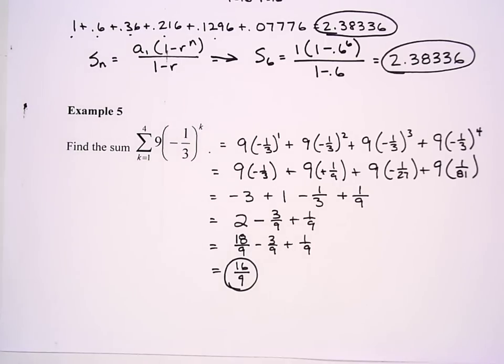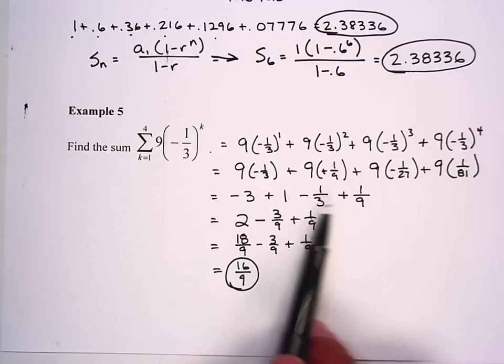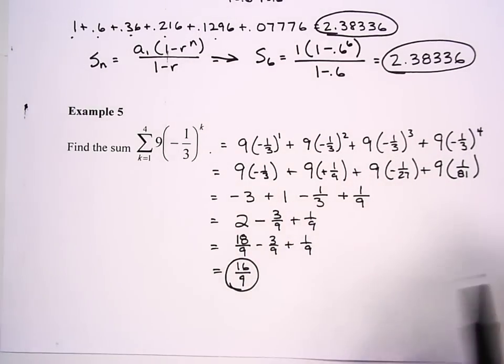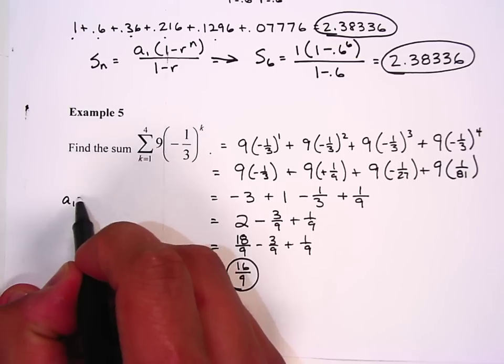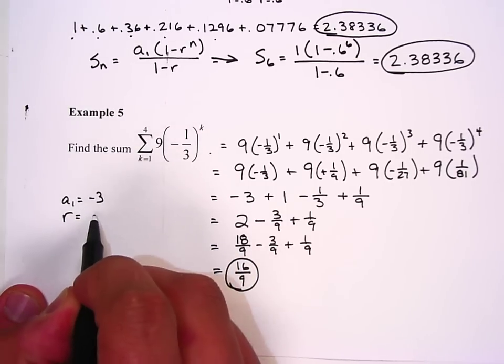Now the other thing we could have done is gone through and found that geometric sequence. If I went through and said -3, 1, -1/3, 1/9, that has an a sub 1 value of -3 and a common ratio of -1/3.